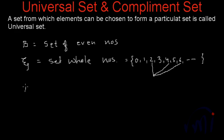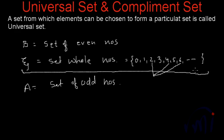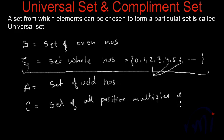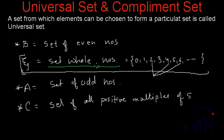Similarly, if I define set A as the set of odd numbers, the set of whole numbers will also be its universal set. And if I define set C as the set of all positive multiples of 5, this set will also be a subset of the set of whole numbers. So all three sets can be drawn from this universal set. Now let's talk about the complement set.